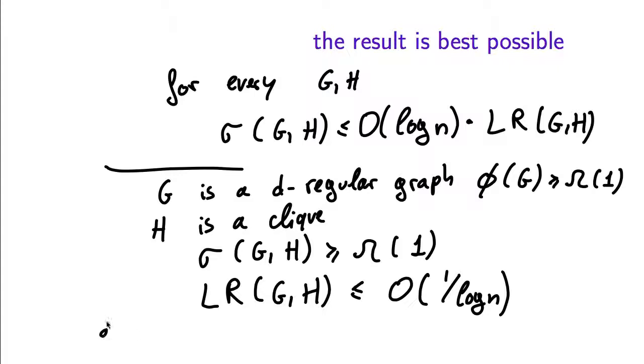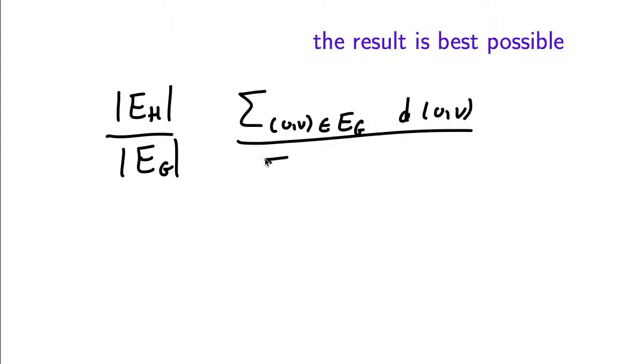To see this, let's define d_UV to be the length of the shortest path from U to V in G. And now let's consider what is the cost of the solution in the Leighton-Rao relaxation. This is going to be |E_H| over |E_G| times summation over all edges UV of G of d_UV, divided by summation over all edges UV of H of d_UV.